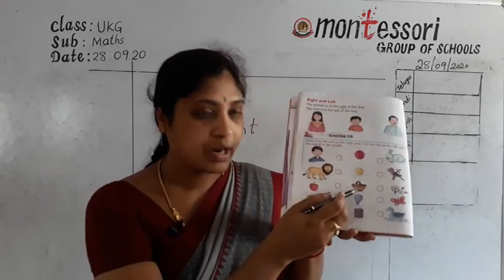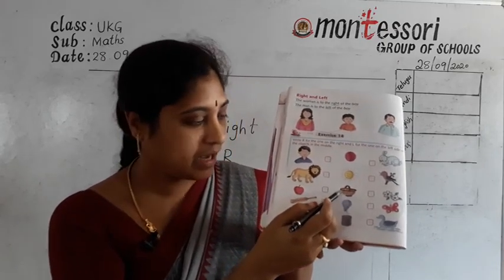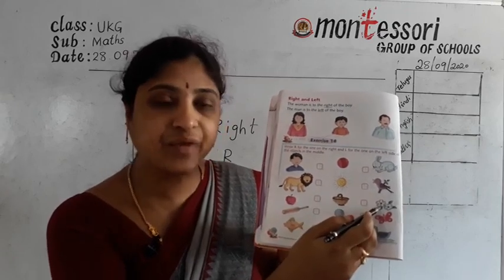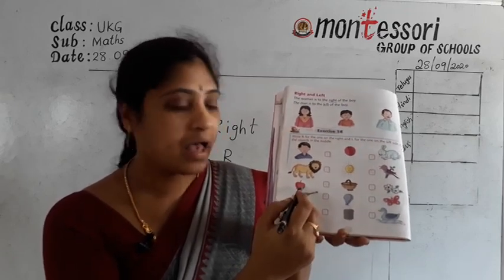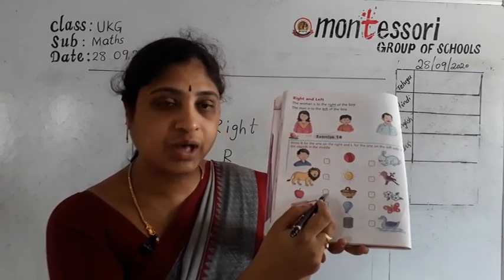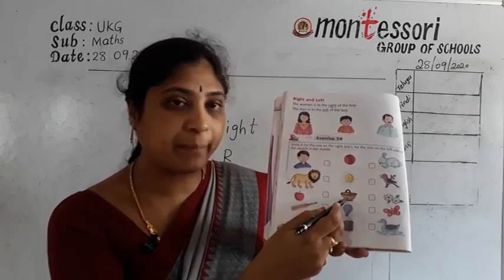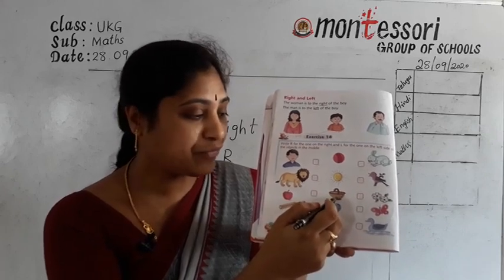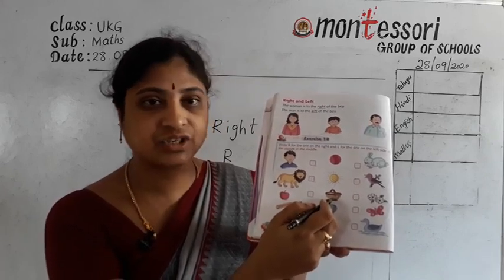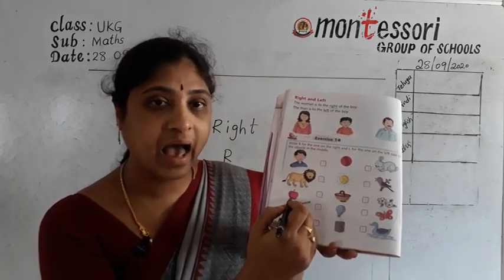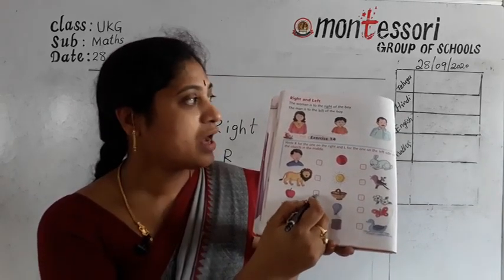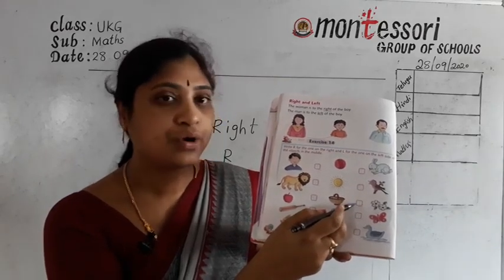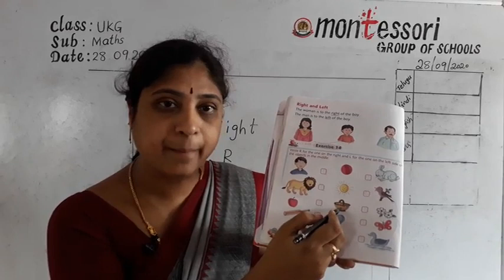Go to the next picture. This one is a basket. On the right side is an apple and on the left side are flowers. The apple is to the right of the basket. The flowers are to the left of the basket.